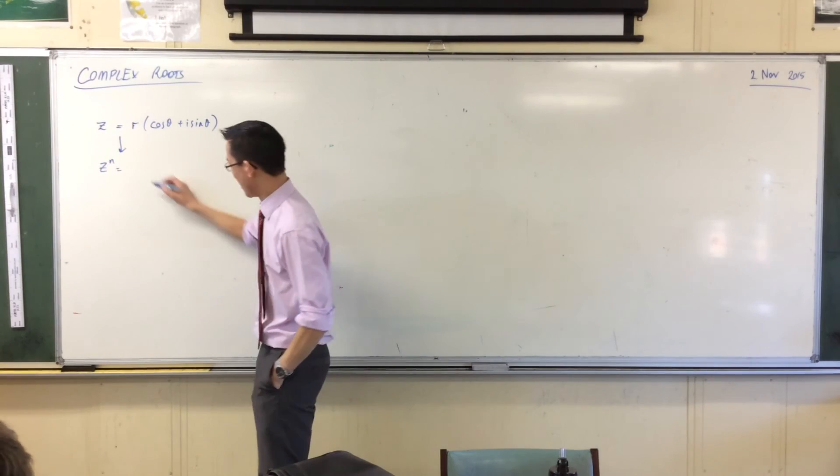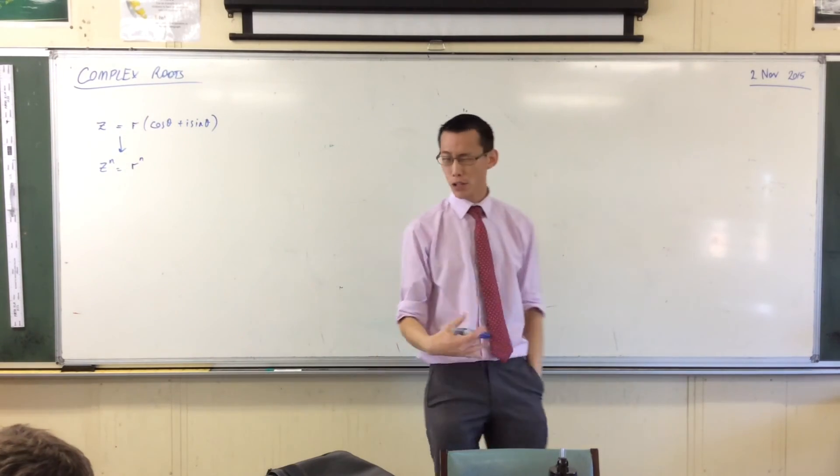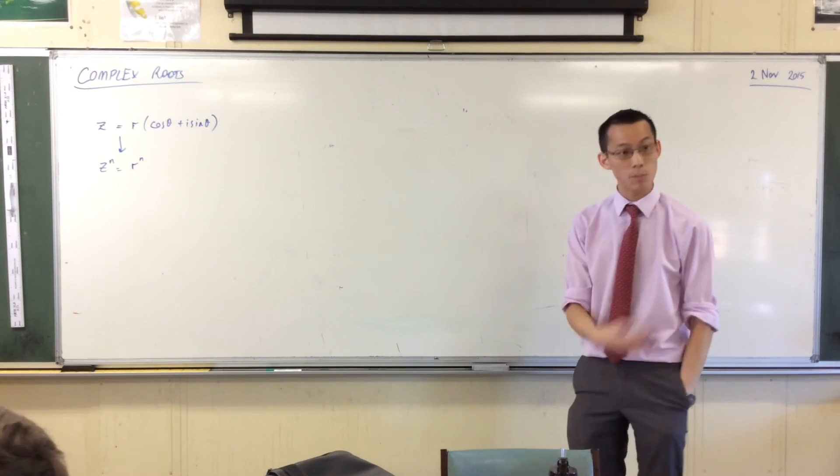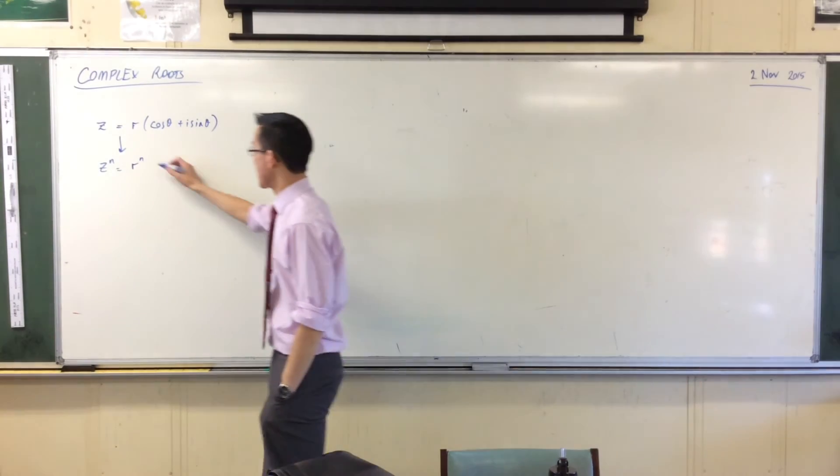What happens to the modulus? Because we're multiplying mods, if you're multiplying z by itself n times, you'll multiply the modulus by itself n times. That's that part.